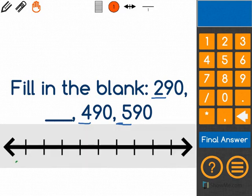I'll add my numbers to the number line: 290, blank, 490, and 590.